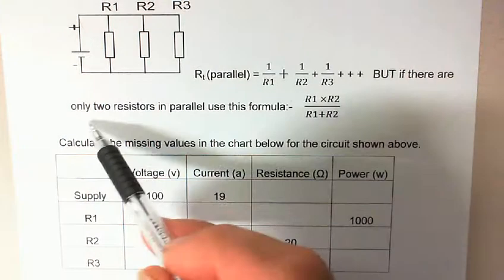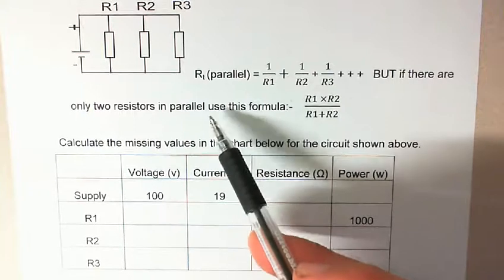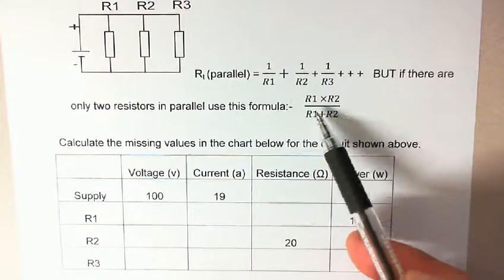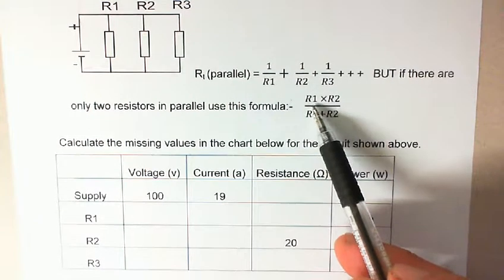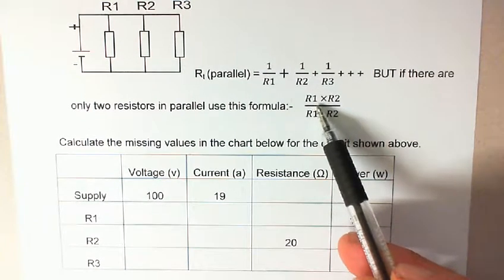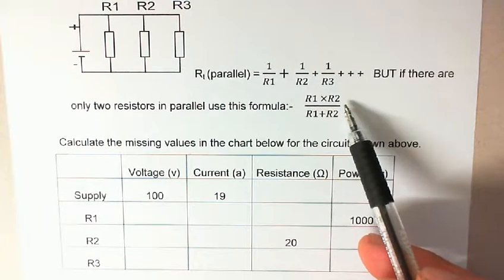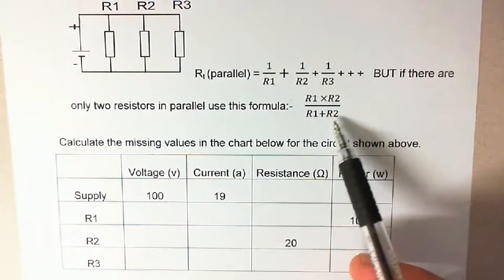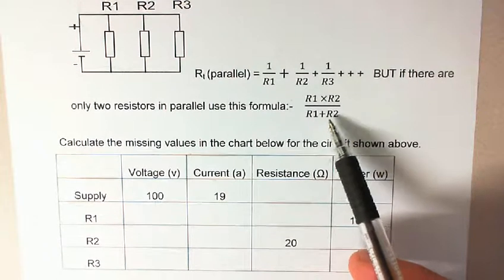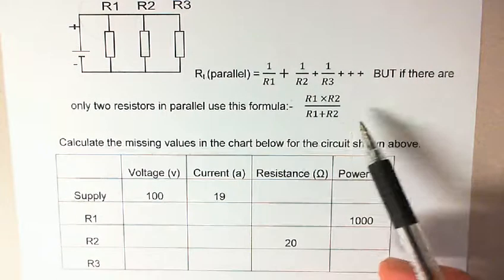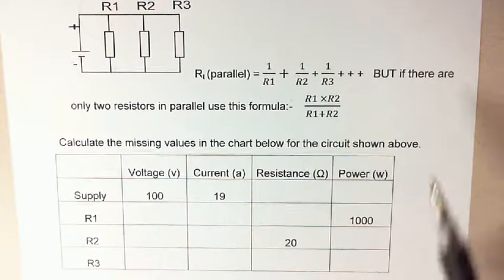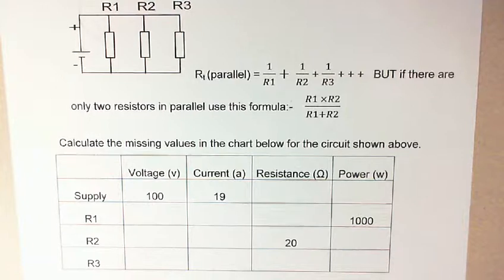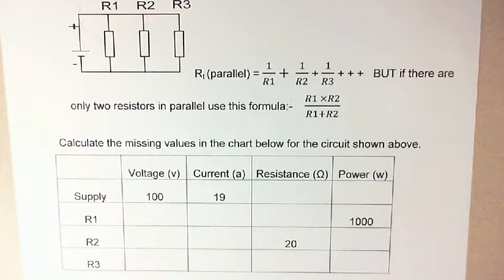However, if there's only two resistors in parallel, the best formula to use is this one here: R1 times R2 divided by R1 plus R2 equals R total. That's the better one.